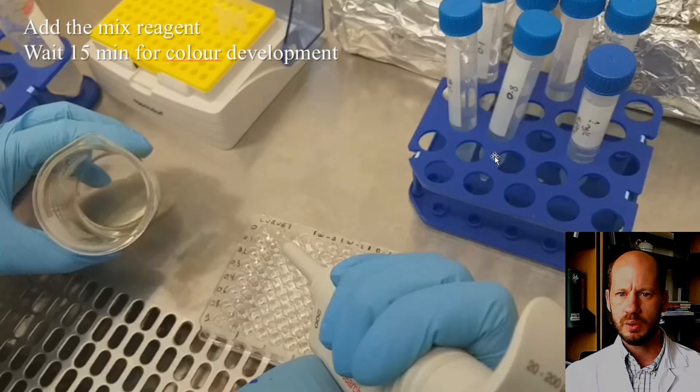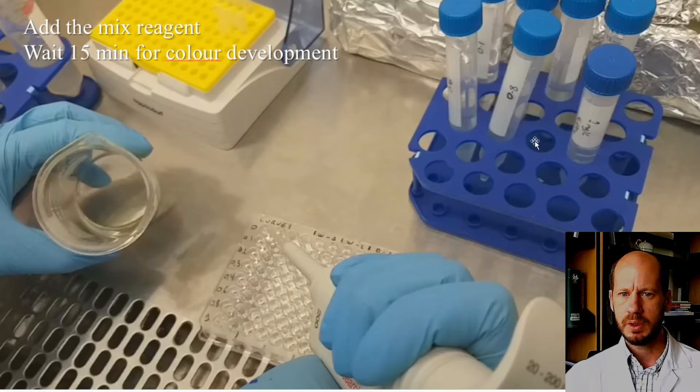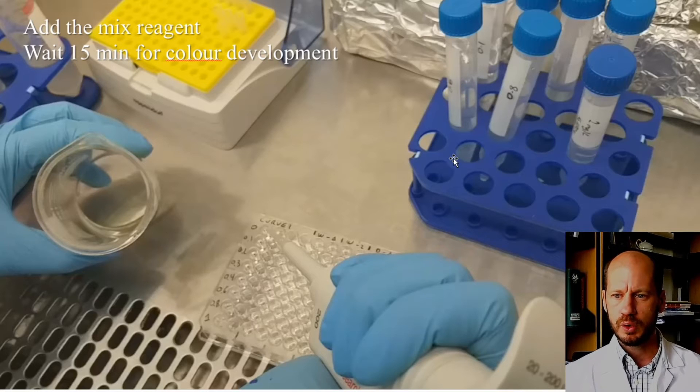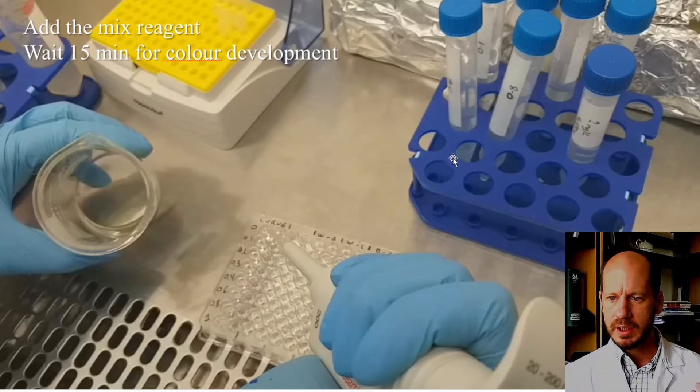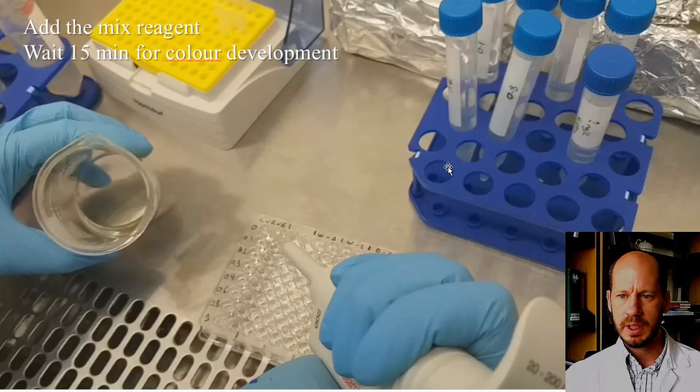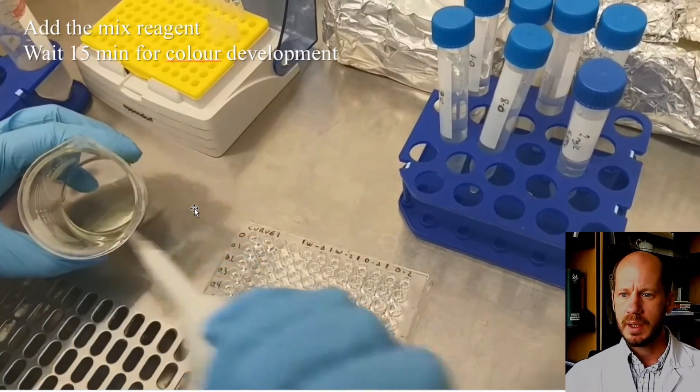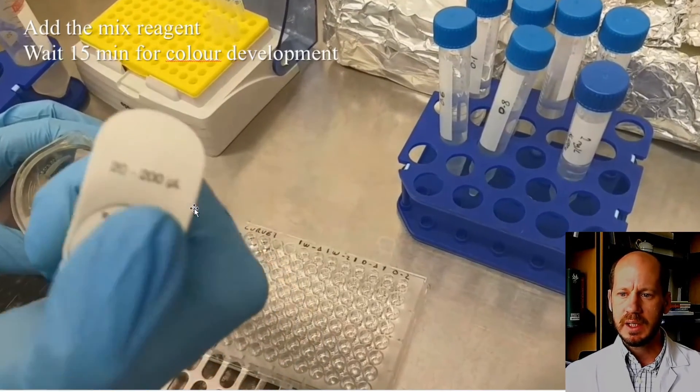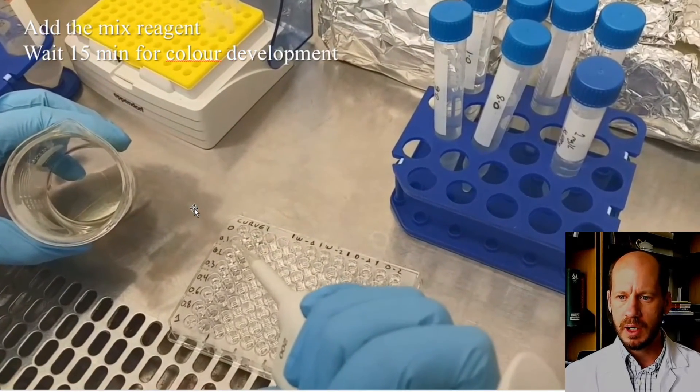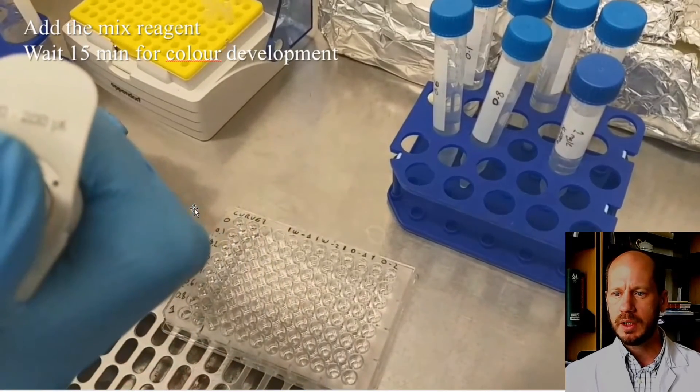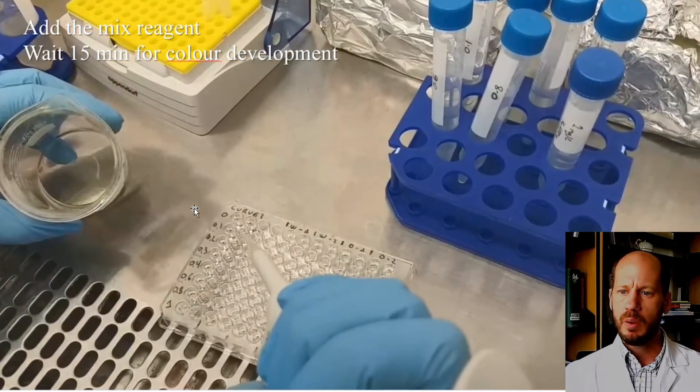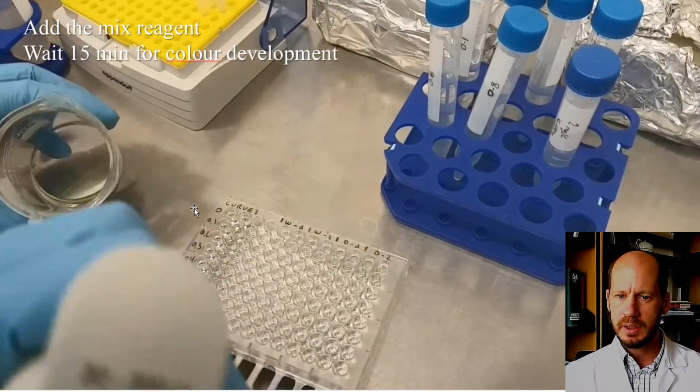After we do that, we need to add the mixed reagent to develop color in the sample. We add 40 microliters to all the standards and all the samples at the same time. The reason you do that at the same time is because this color development is a time-dependent reaction. If you wait too long, it will develop more color. If you wait not enough time, it will develop less color. You have to wait between 15 and 45 minutes.